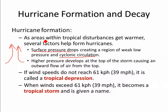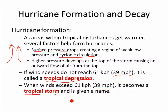Once we have that circulation going, if the winds stay less than 39 miles per hour, we call it a tropical depression. As the storm develops and wind speeds exceed 39 miles per hour, it becomes a tropical storm — and that is the point at which it's given a name. Names are issued alphabetically each year, with the first storm getting a name starting with A. So we know Gaston had been preceded by named storms A through F.